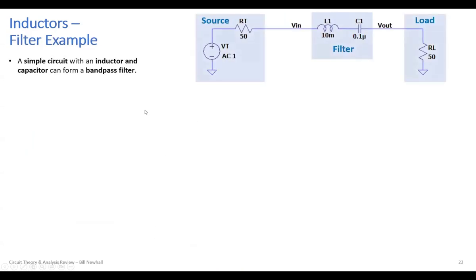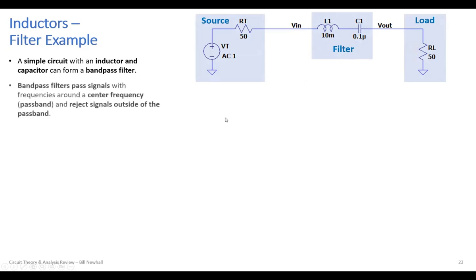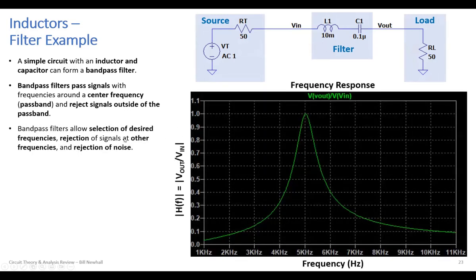Here's a filter example — a simple circuit with an inductor and capacitor forming a bandpass filter. There's a sinusoidal source on the left, a resistive load on the right, and in the middle a 10 millihenry inductor and 0.1 microfarad capacitor forming the filter. This bandpass filter passes signals around a center frequency and rejects signals outside that passband. Here is the frequency response: the filter allows selection of a desired frequency and rejects signals outside the passband.